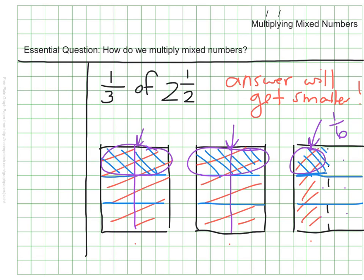So that each of these small rectangles represents a sixth. Now I can see that I have one, two, three, four, five, six. My answer is that one-third of two and a half equals five-sixths. And that matches what I thought would be reasonable. It's slightly less than one whole.